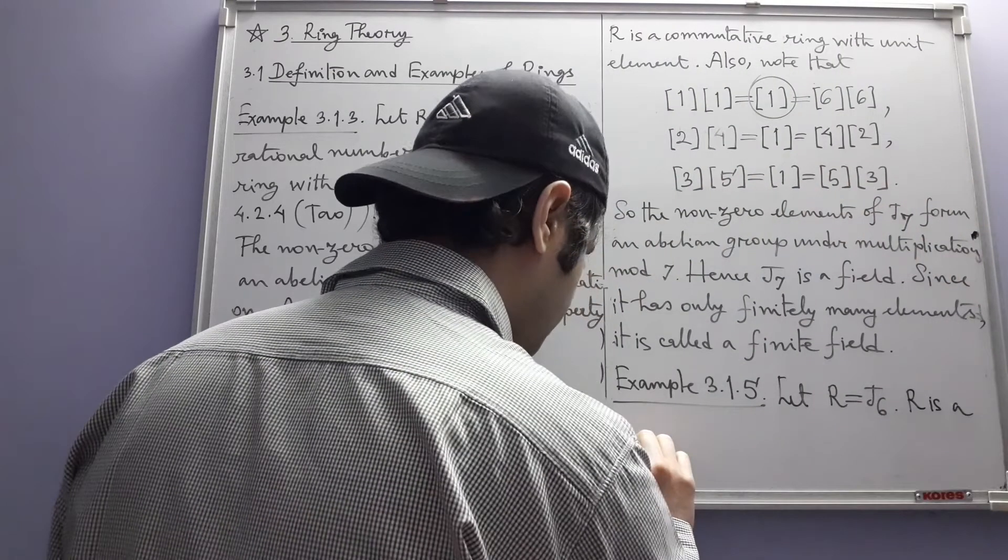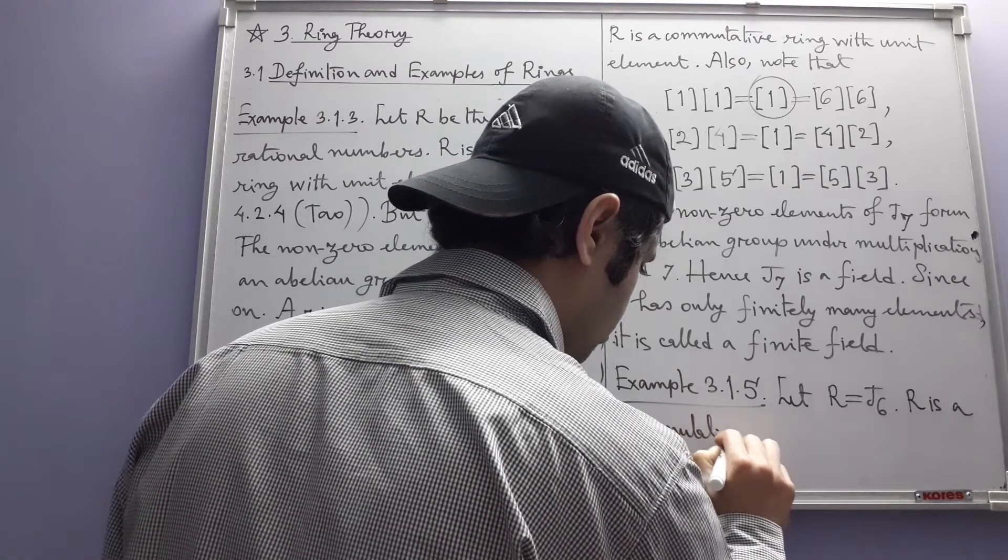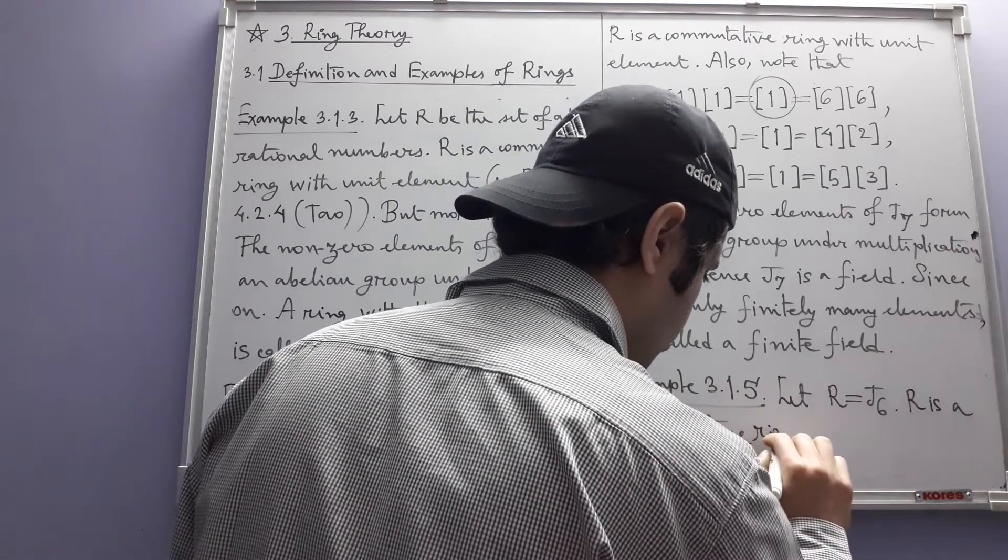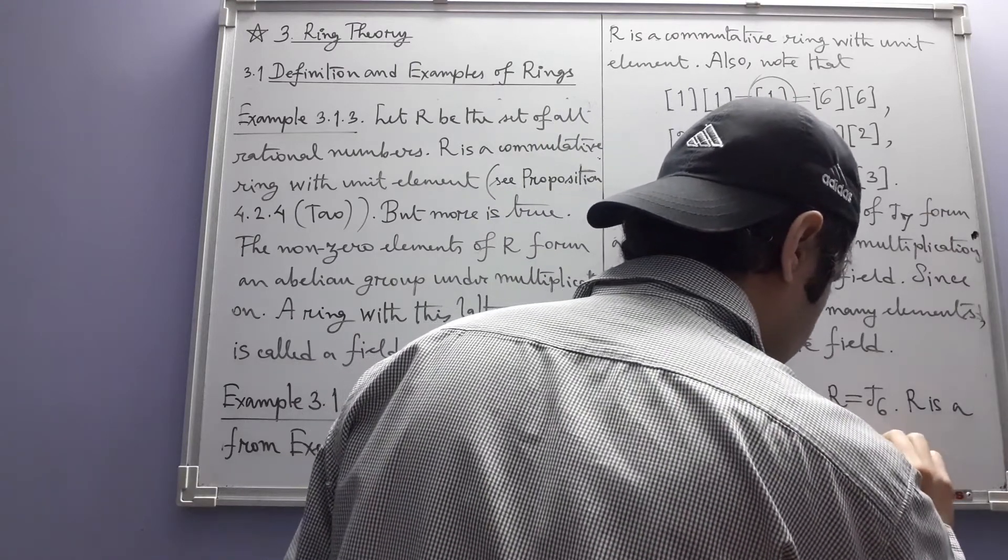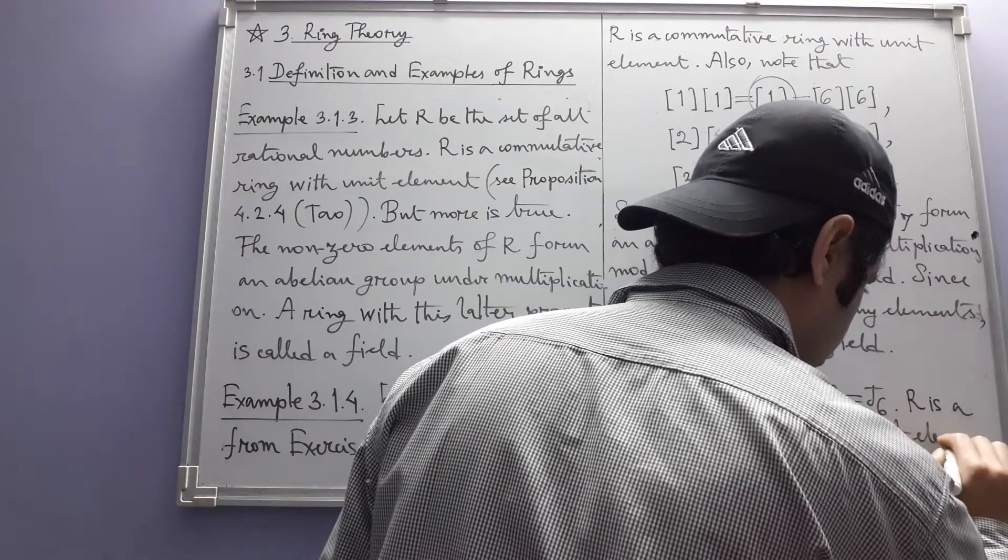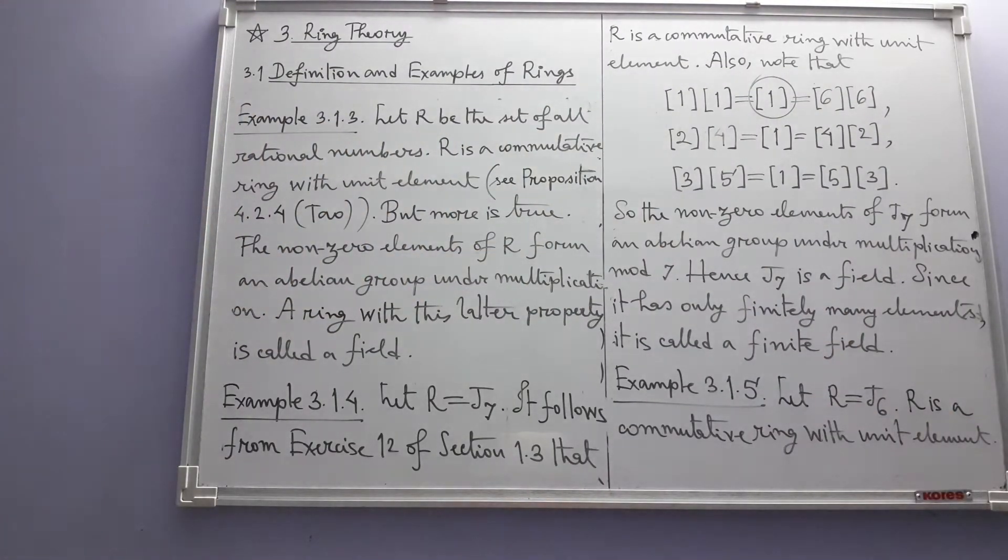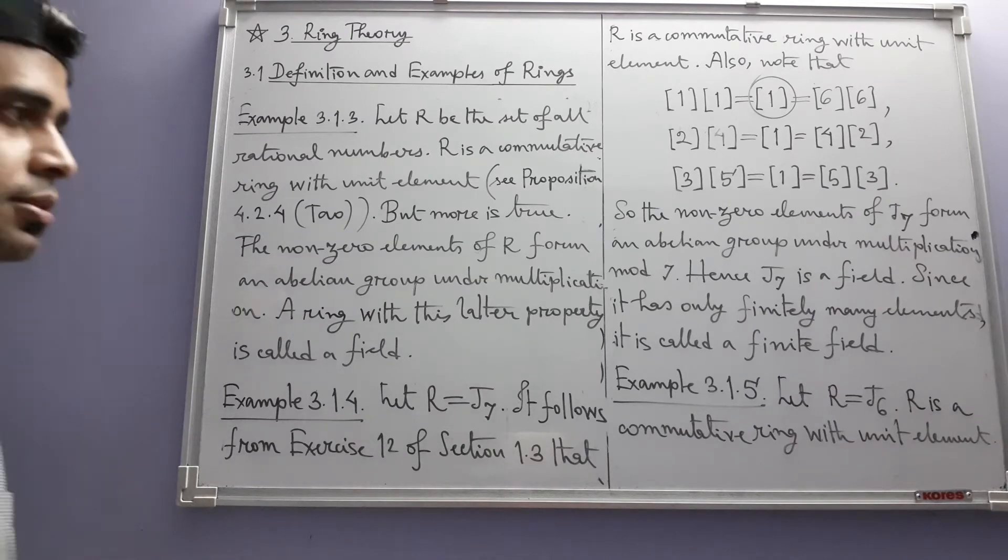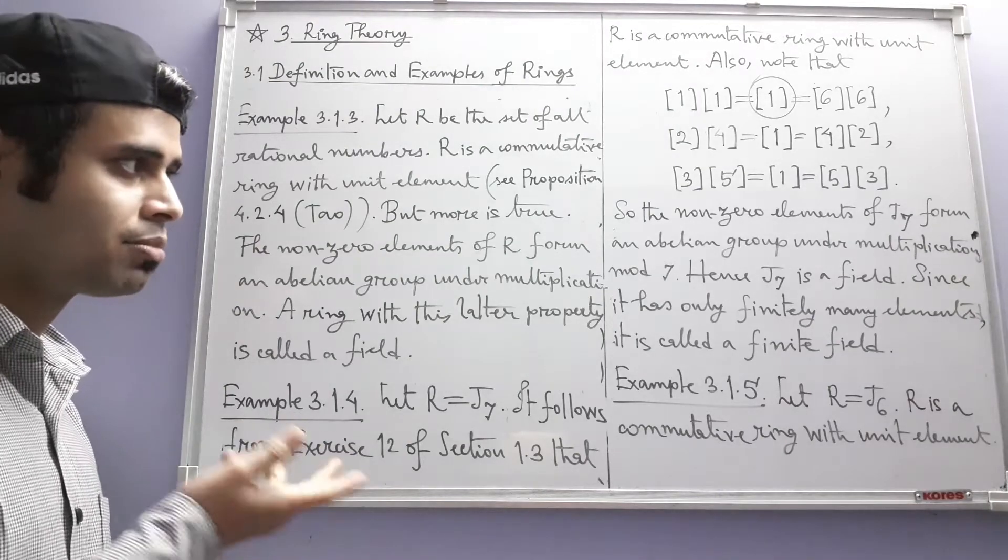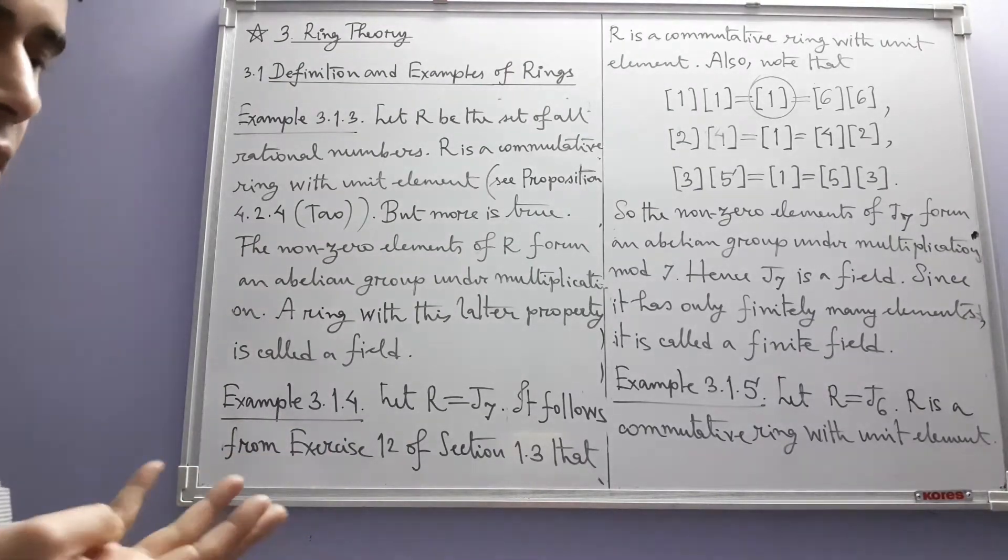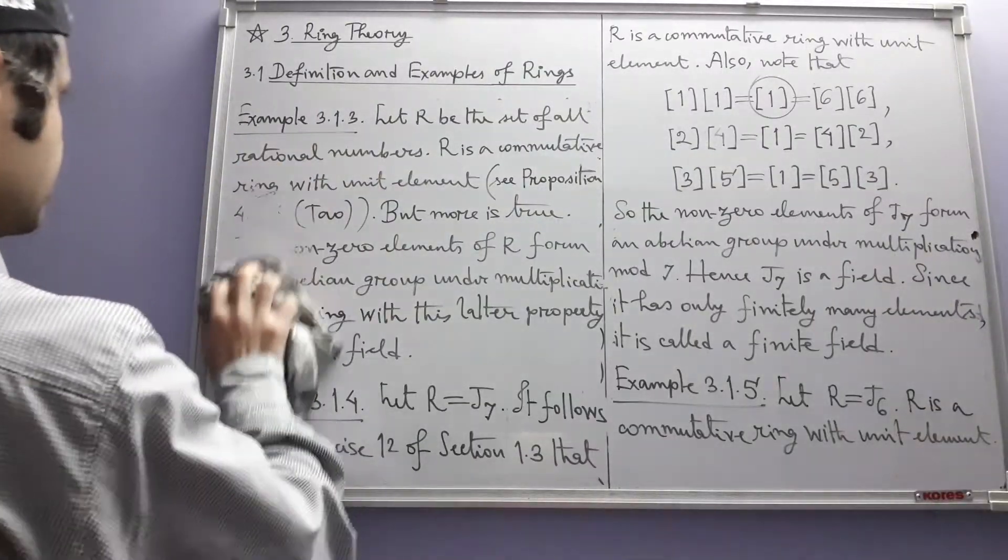R is a commutative ring with unit element. But in J6, something happens which we usually don't see happening with the numbers with which we are familiar, like rational numbers, integers, real, complex numbers. Let's see what that thing is.